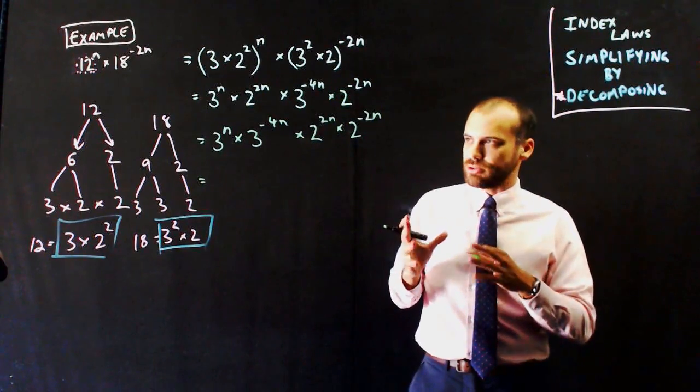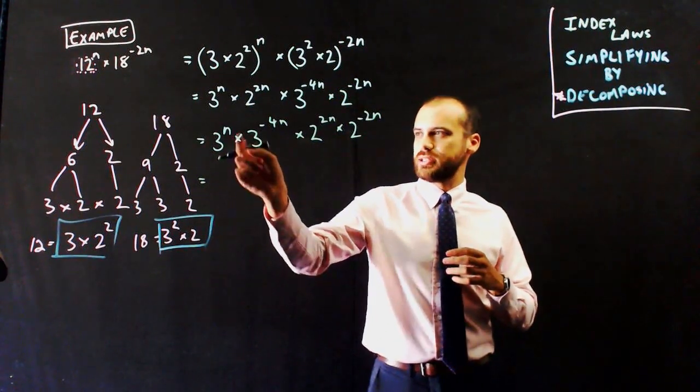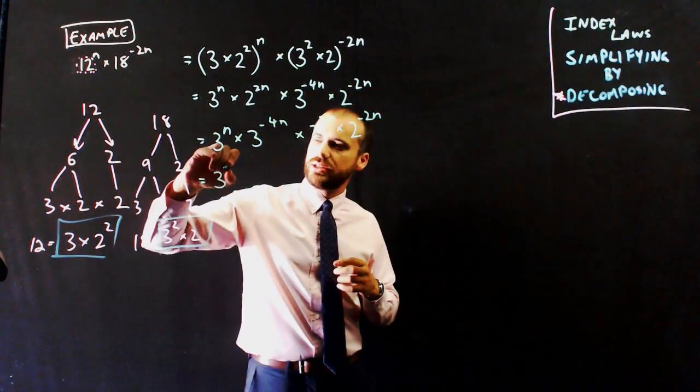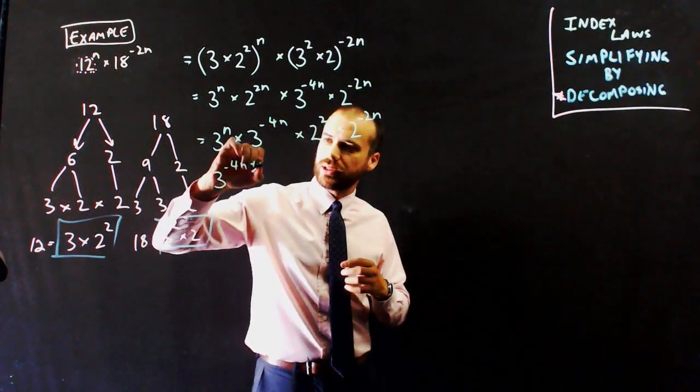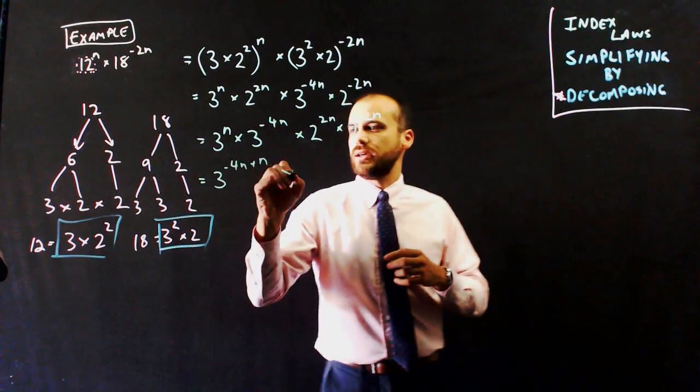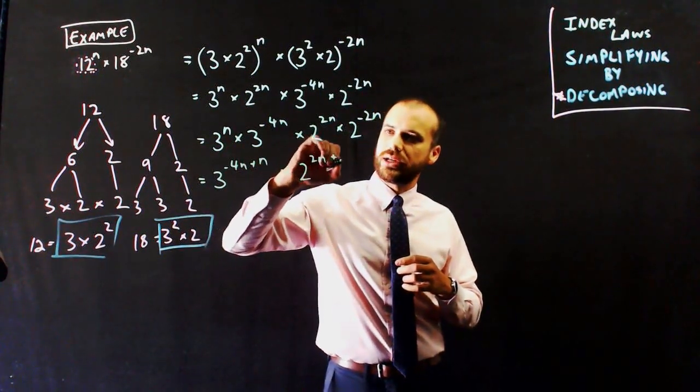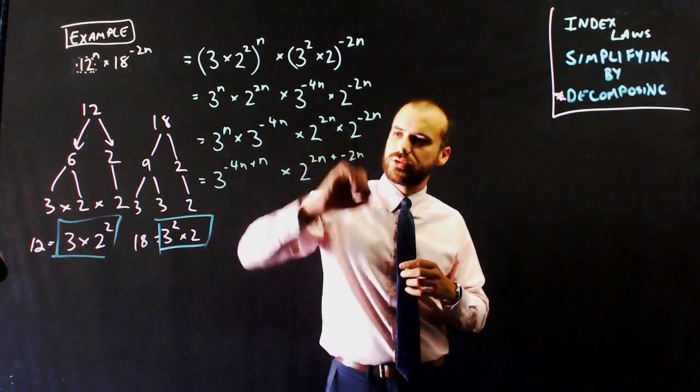My first index law says that if I'm multiplying two indexes, I add those bits together. So it's going to be 3 to the negative 4n plus n, and then multiply it by 2 to the 2n plus negative 2n.